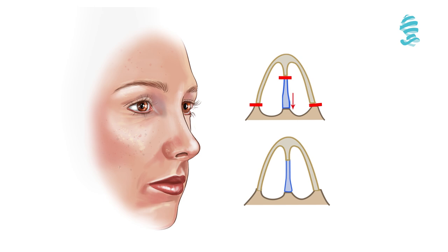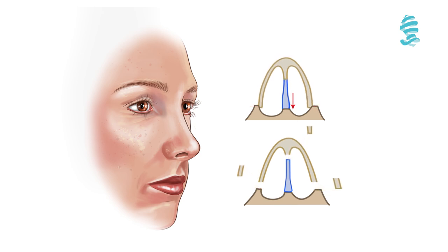The septal cartilage is resected from inside the nose. Then osteotomies are done to push or let the hump down.